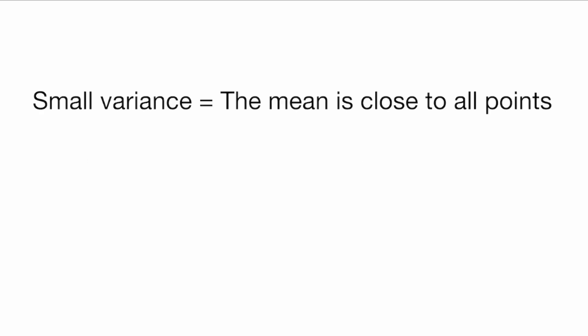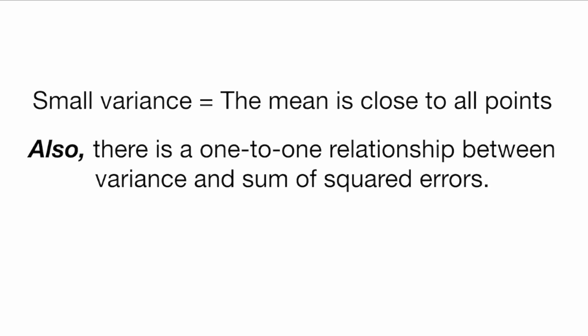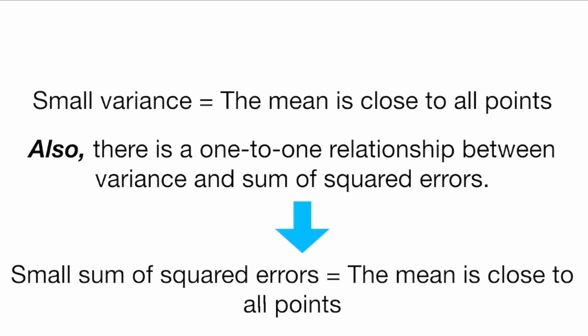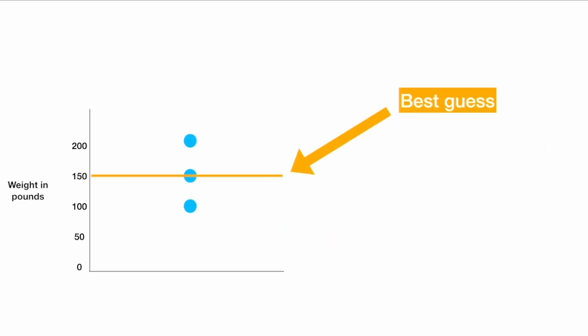So this is our sum of squared errors: 2,500 plus 0 plus 2,500 is 5,000. The sum of squared errors is 5,000. As long as I know the size of the data set — our sample size n — I can always recover the variance from the sum of squared errors. In this sense, they are really the same thing. To recap: a small variance means the mean is close to all the points, and there is a one-to-one relationship between variance and the sum of squared errors.